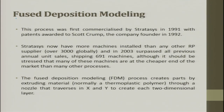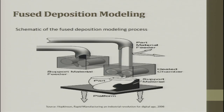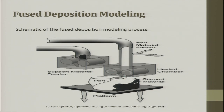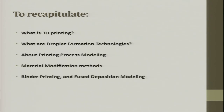The last process to be discussed is fused deposition modeling (FDM). This process almost overlaps with the extrusion-based process. A supporting material is separately fed, and the building material is separately fed. The tension in the extrusion process is maintained by two spools or rollers. The filament comes from the spool, passes through a nozzle where it is heated, and is then deposited on top of a table or platform. The platform sinks down layer by layer until the required output is built. In this chapter, we covered 3D printing, droplet formation technology, printing process modeling, material modification methods, binder printing, and fused deposition modeling.